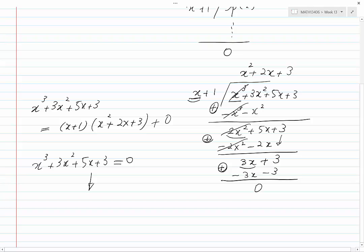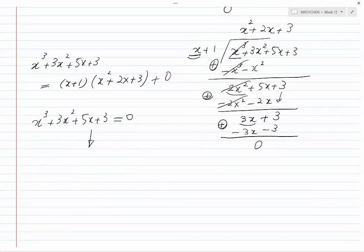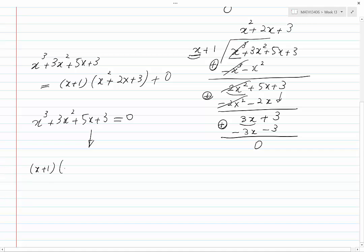We were able to write the left-hand side as x plus 1 times x squared plus 2x plus 3, equal to 0. The product of two expressions has become 0.